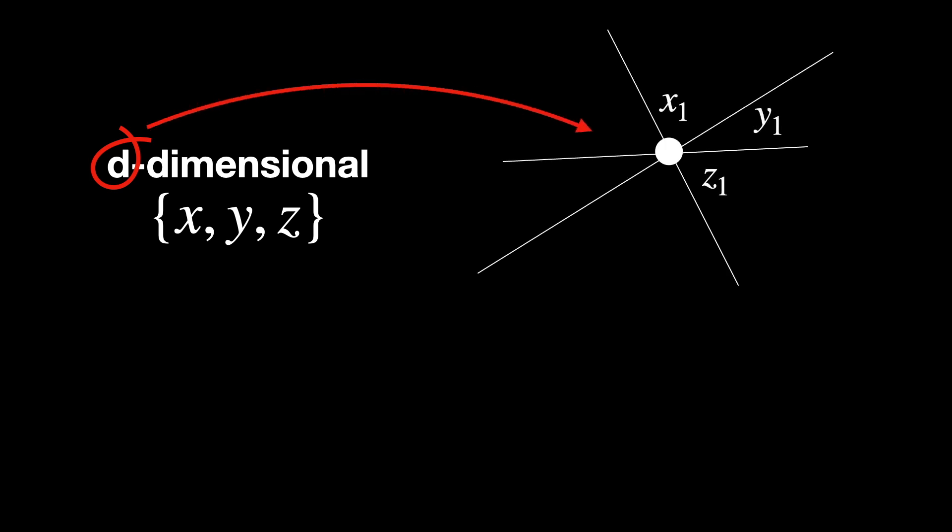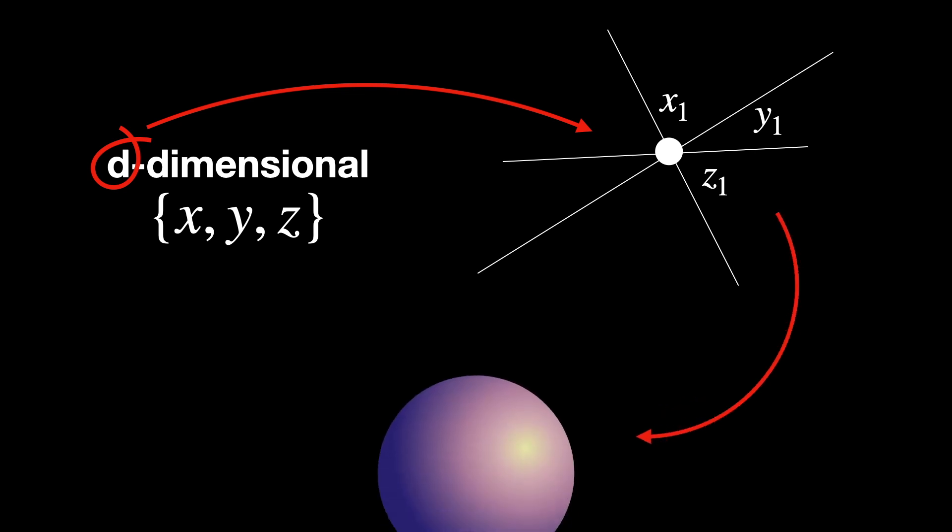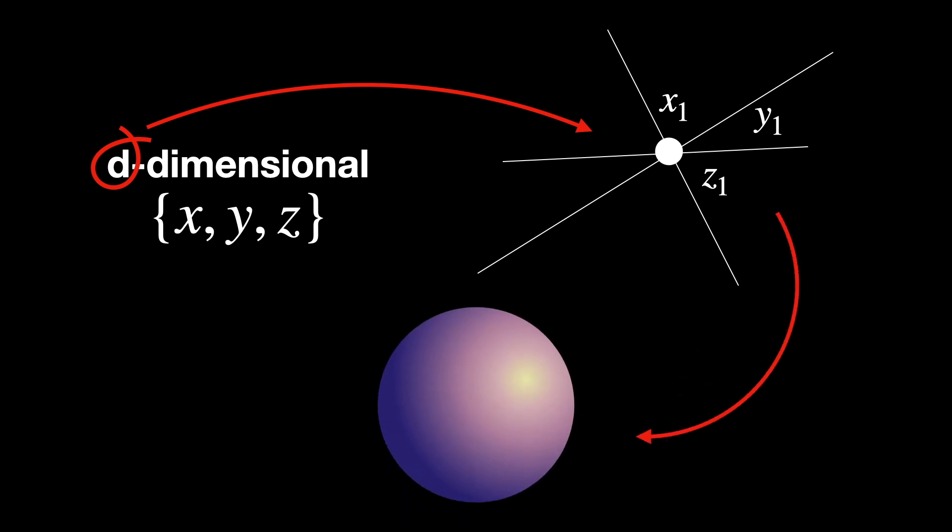If you want to know more about this in detail, check out the video that we put in the description below. Thus, at its core, the intuition that a D-dimensional set is one where D numbers are needed to specify a point can indeed be developed into a rigorous definition which will tell us that the surface of a solid sphere is two-dimensional.